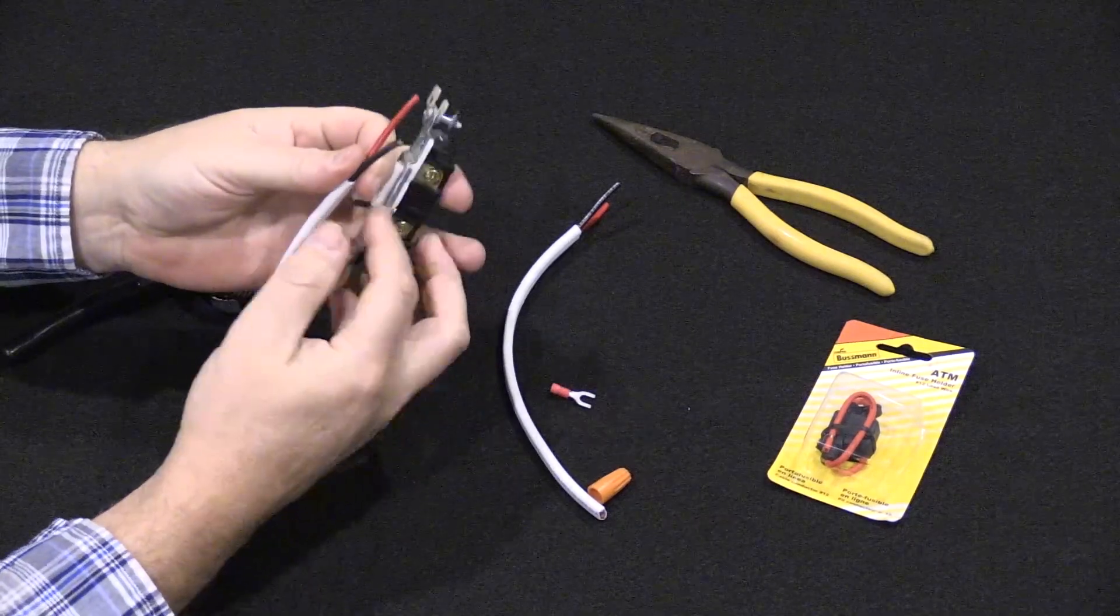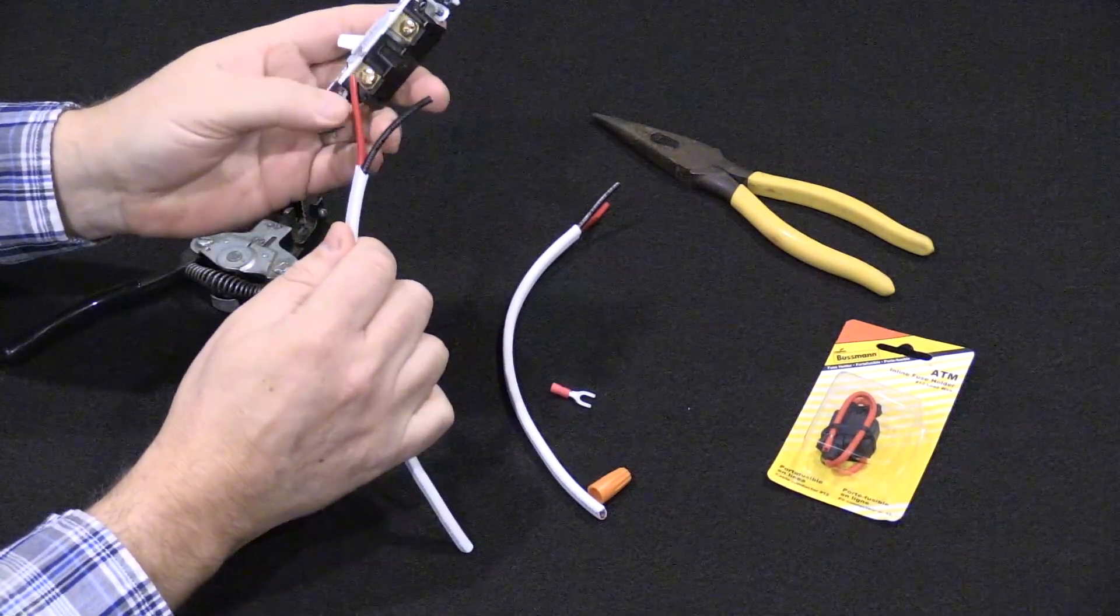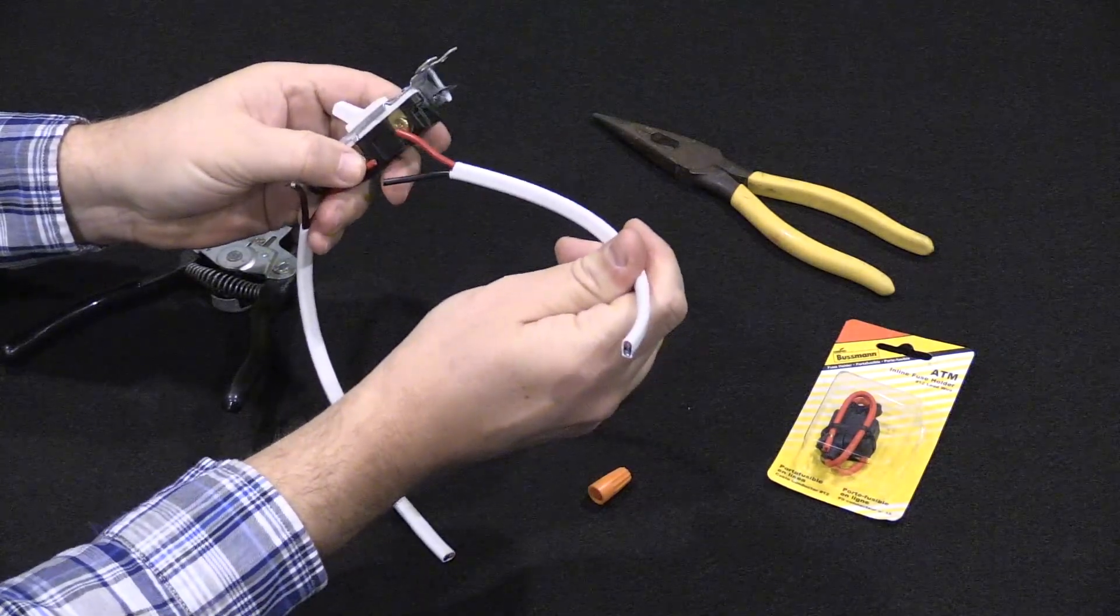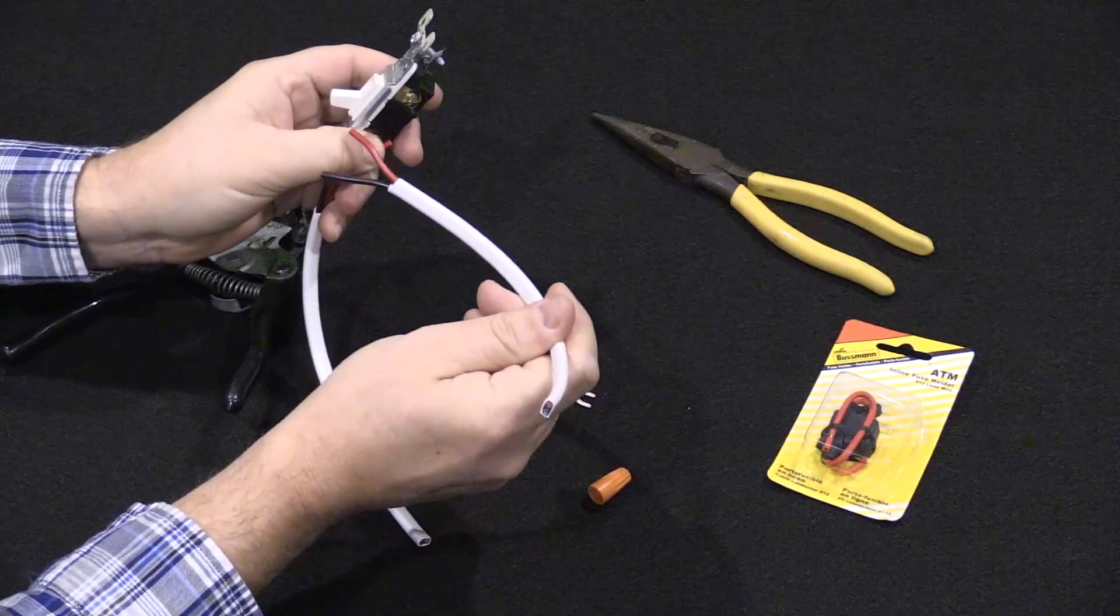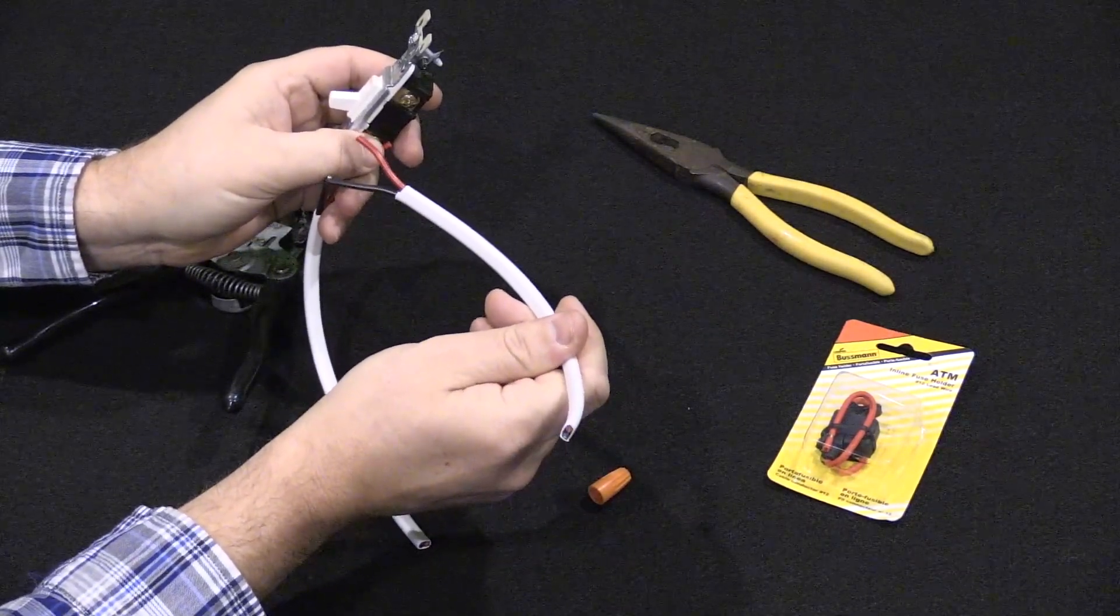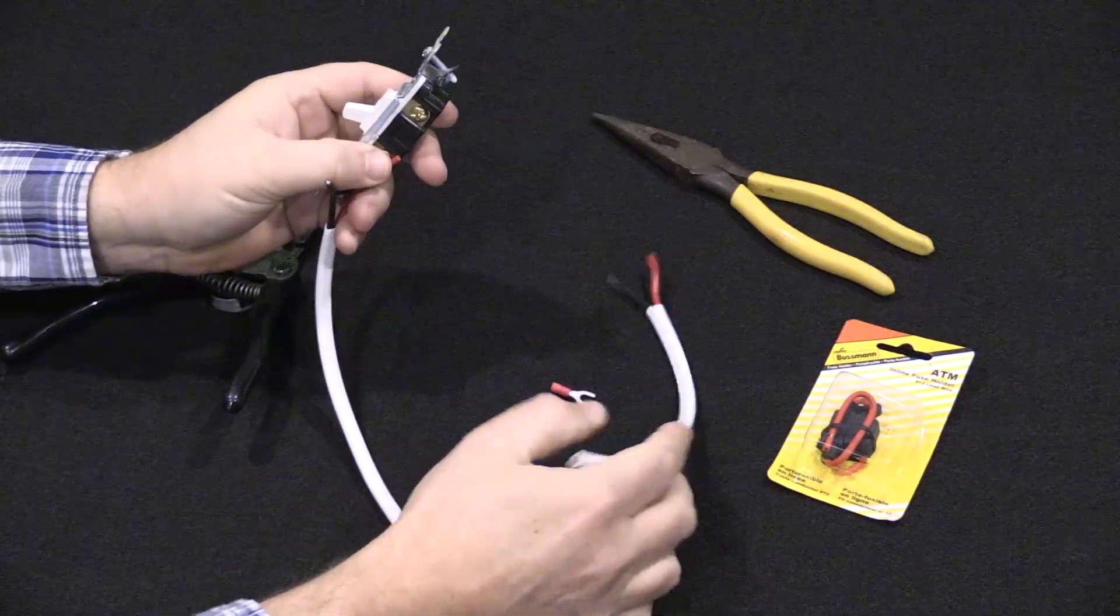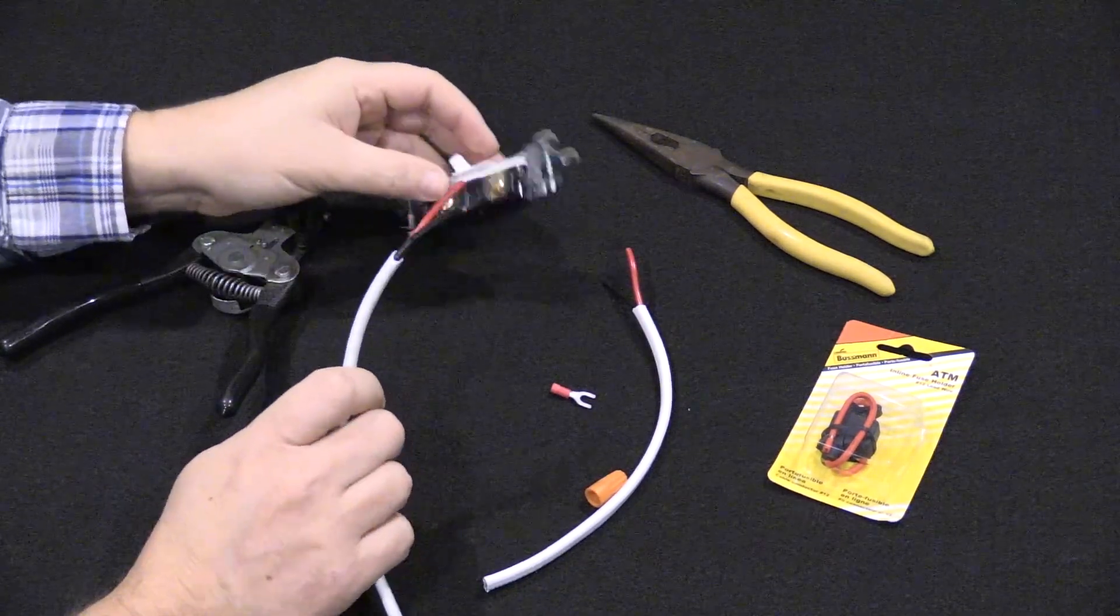And the difference with these is you don't use the ground here, the little green screw, you don't use the ground. What you'll need to do is run red to red, and then just connect the black to black. The black doesn't go through the switch.